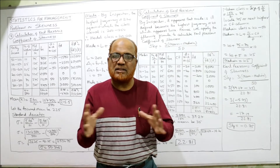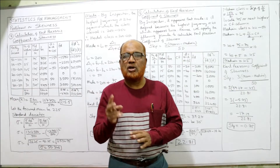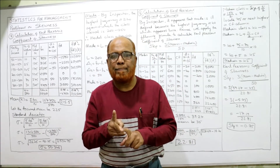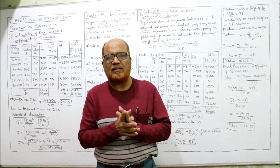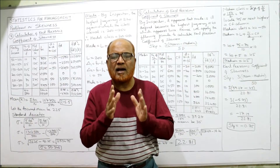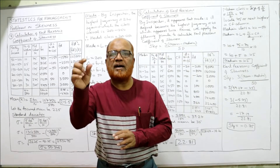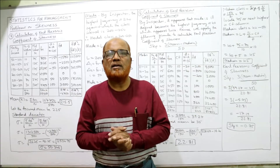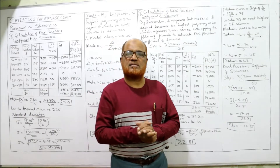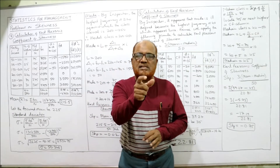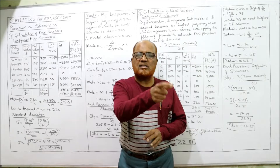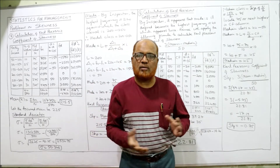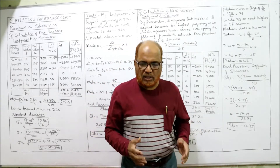Two methods are available: Carl Pearson and Bowley. Carl Pearson's formula is mean minus mode divided by standard deviation. Bowley's quartile-based skewness formula is Q3 plus Q1 minus two times median, divided by Q3 minus Q1.